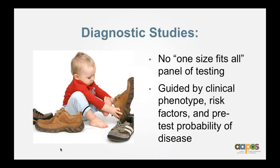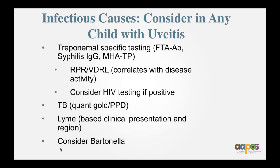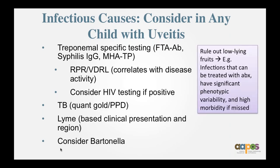Diagnostic studies: not even the most esteemed uveitis specialists agree on what to order — there is no one-size-fits-all panel. Testing should be guided by clinical phenotype, risk factors, and pretest probability of disease. For infectious causes in a child with uveitis, consider treponemal-specific testing for syphilitic disease — order treponemal-specific testing either in addition to the RPR or VDRL, or at least as a screening lab. If positive, consider HIV testing. TB: QuantiFERON Gold or PPD. Lyme disease based on clinical presentation and region. Consider bartonella in select cases. Infection can be treated with antimicrobials, and you can cause significant morbidity if it's treated as a non-infectious entity.